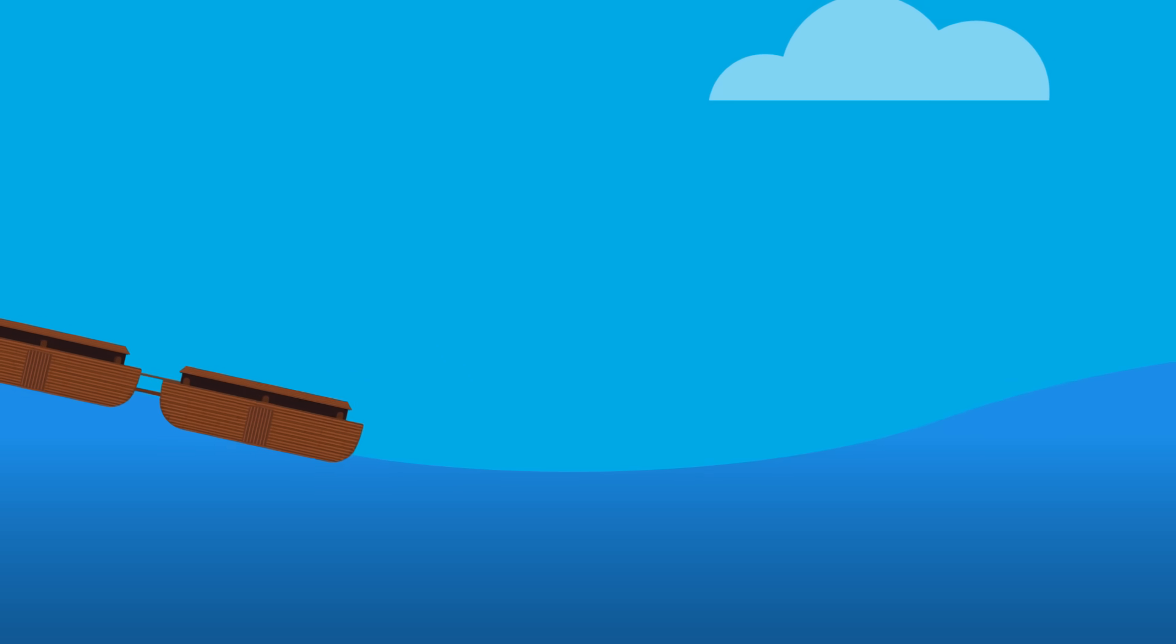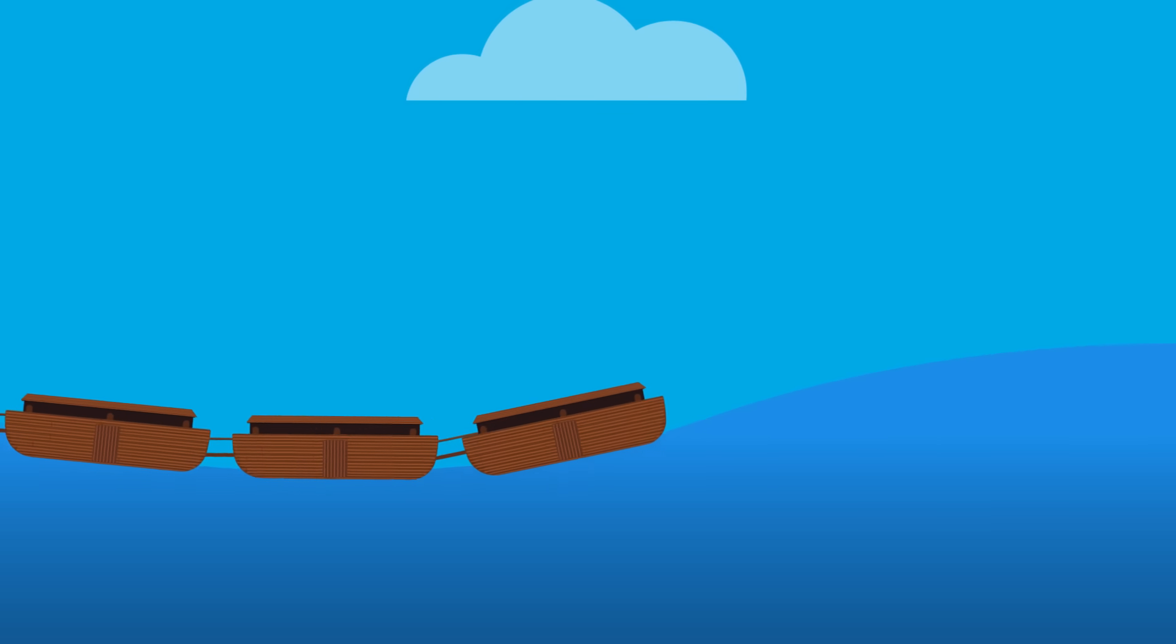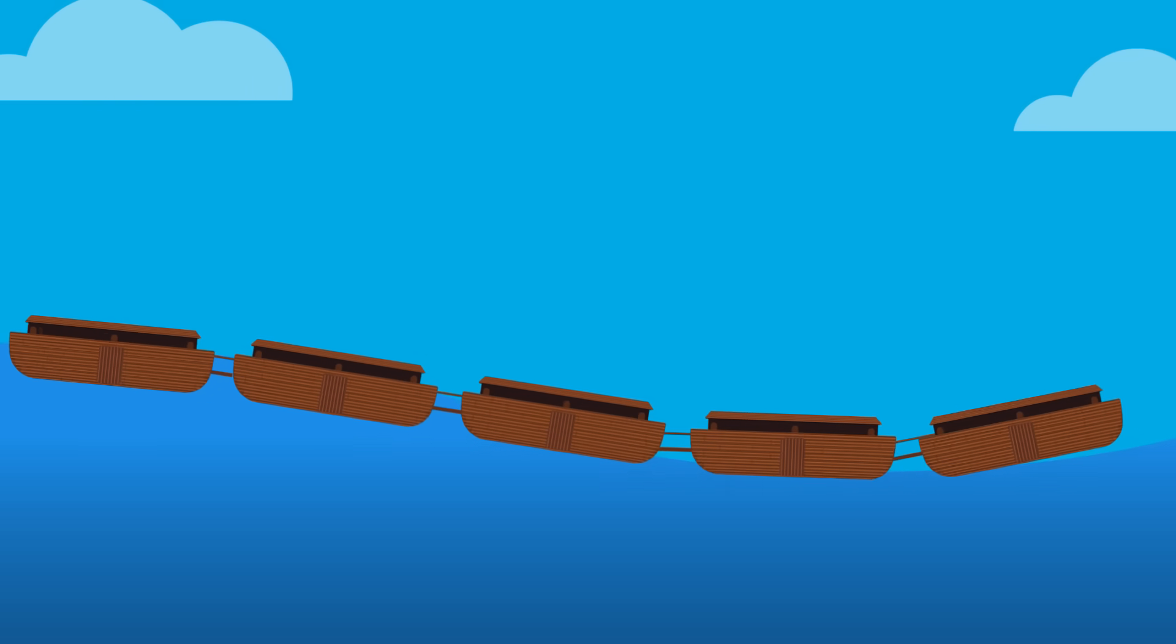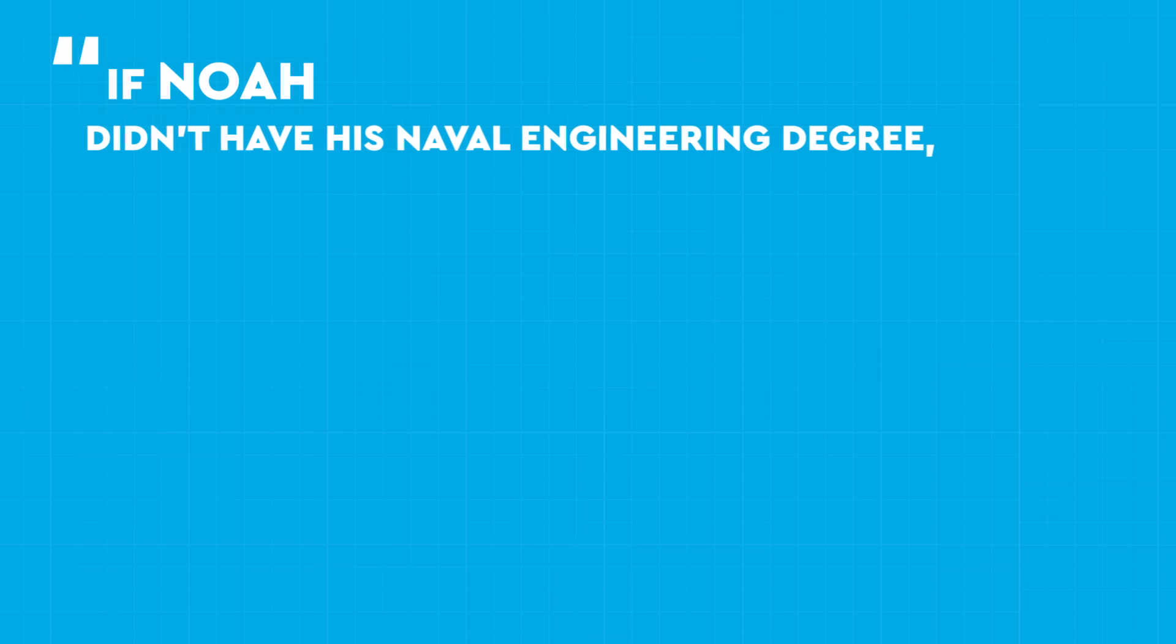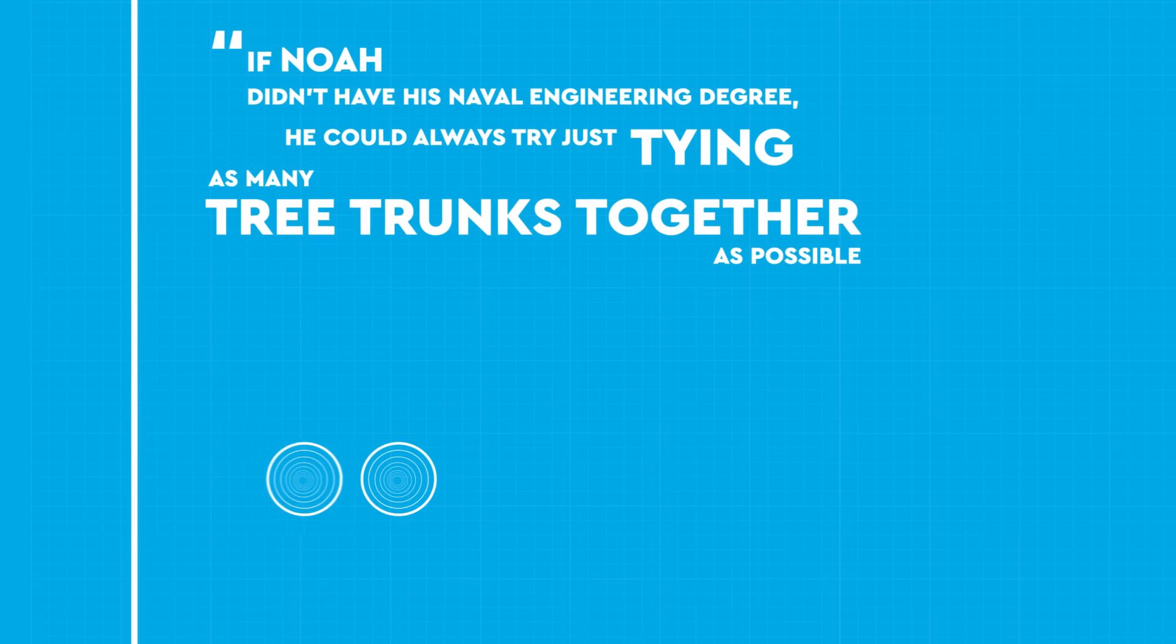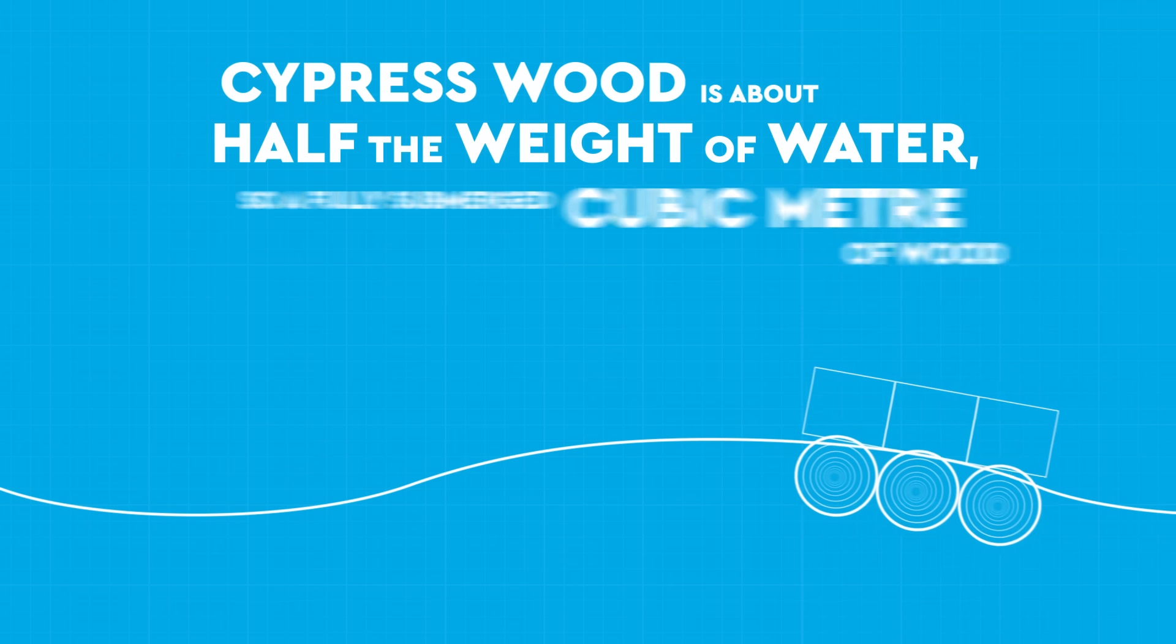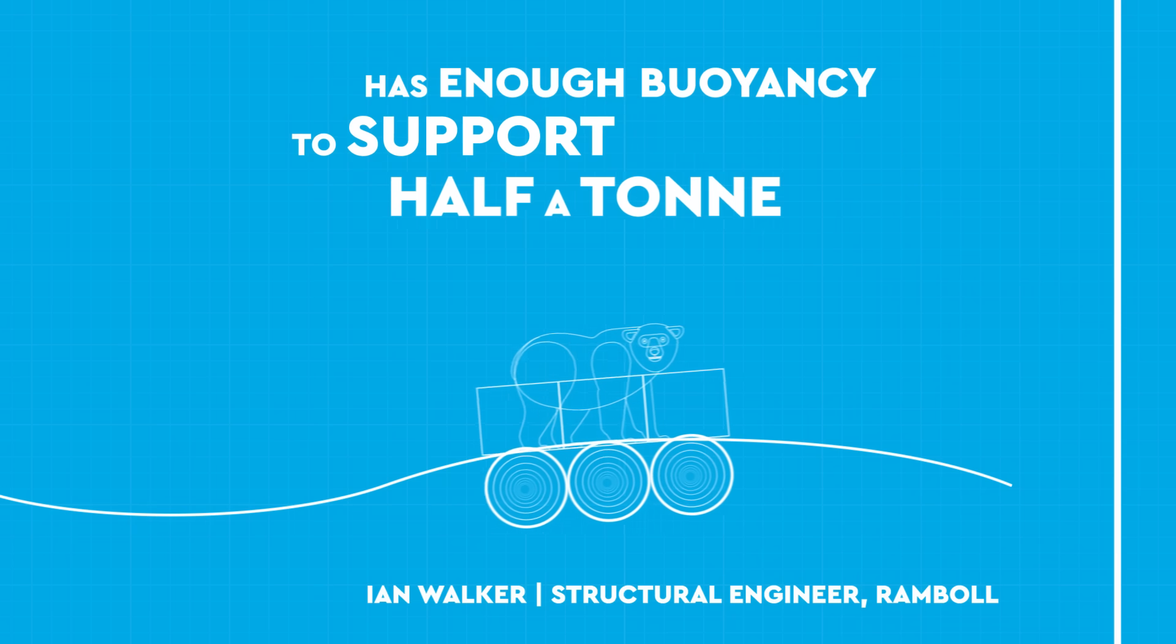It's been suggested that Noah could have instead built a flotilla of smaller boats, which he could attach to one another with ropes and gangplanks. Then his fleet could move independently of each other and go with the flow of the waves, rather than resisting them. If Noah didn't have his naval engineering degree, he could always try just tying as many tree trunks together as possible and creating a giant raft. Cypress wood is about half the weight of water, so a fully submerged cubic meter of wood has enough buoyancy to support half a ton of animals.